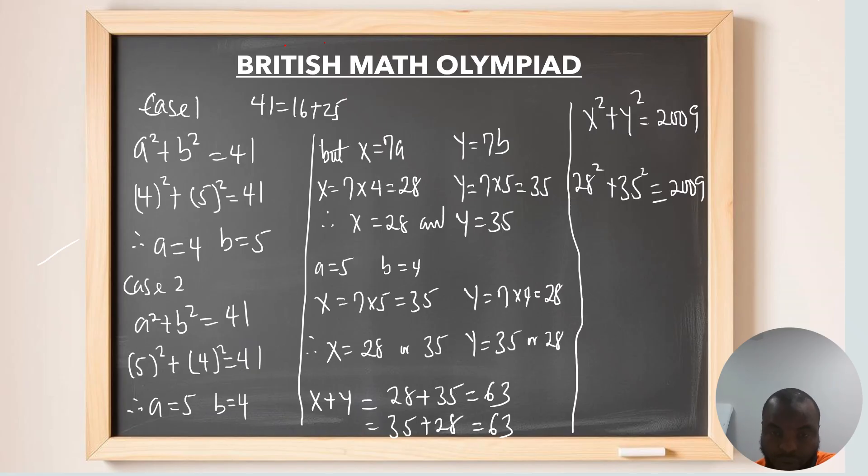This is for case 1, whereby x can be 28 and y is 35. If you twist it, where x is 35 squared and y is 28 squared, you're still going to get the same thing. Thank you very much for watching.